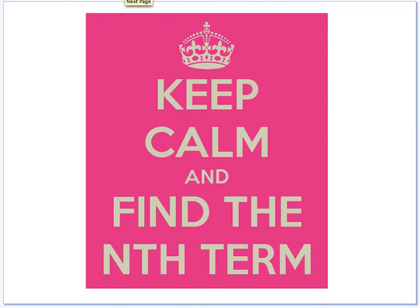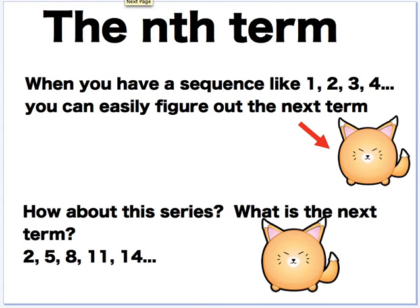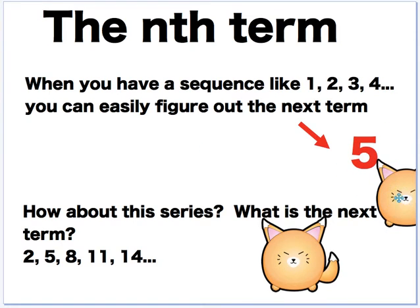So we're going to be looking at the nth term. And a lot of people get really confused about this, like what is the nth term? I'll try to explain it the best I can. So when you have a sequence like 1, 2, 3, 4, you can really easily figure out the next term. So let's say your teacher says, hey, here's a sequence, 1, 2, 3, 4, what is the next term? It should be pretty obvious. You should go, well, it's 5, right, because 5 follows 4.